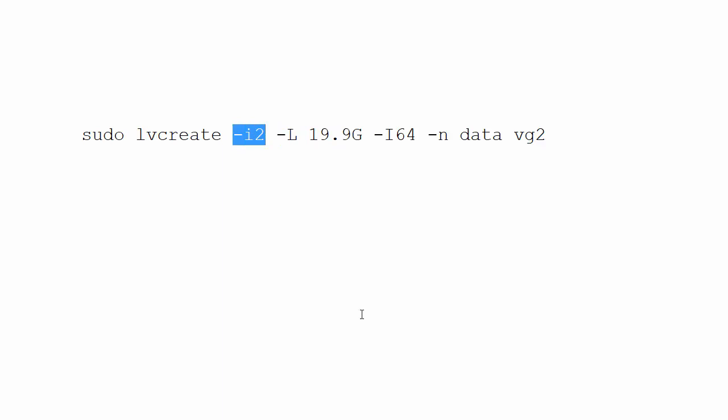And here we have the lowercase -i2. This designates the number of drives that are in this striped logical volume. So, if we were to have like three drives instead of two drives, that would be a lowercase -i3. Four drives, of course, would be a lowercase -i4, and so on.